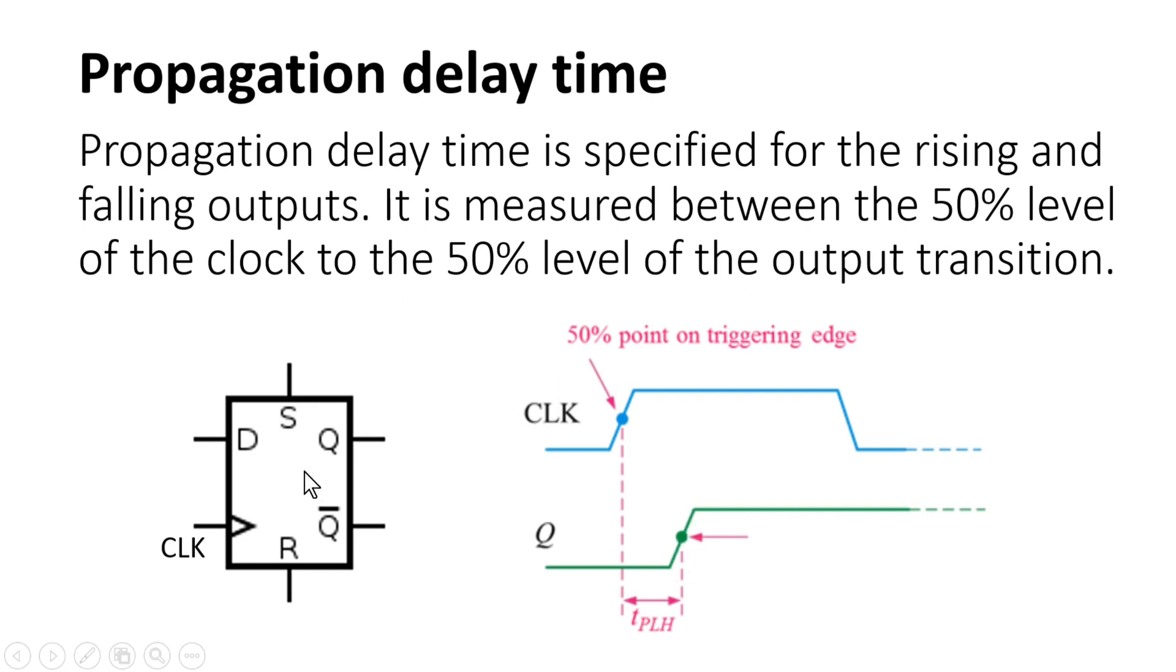So for example, if this flip-flop is a positive trigger flip-flop, then we will consider the positive edge of the clock at the 50% point on the triggering edge to the 50% transition on the output, and this delay is called the propagation delay.